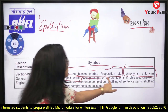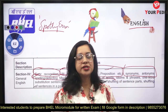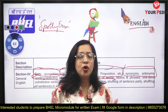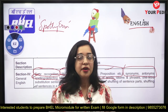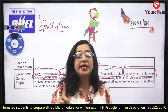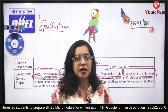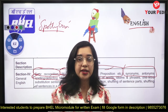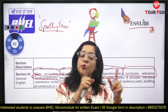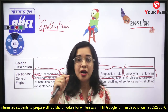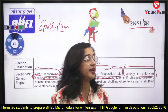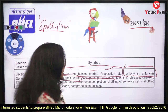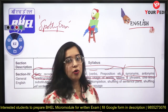Wrong usage of words is the next topic. For example, if I give you the sentence 'Mohan is leading a happy life' — you don't lead a happy life, you live a happy life. So the question asks where the mistake is, which word is wrong, and which word needs to be corrected. That is wrong usage of words.